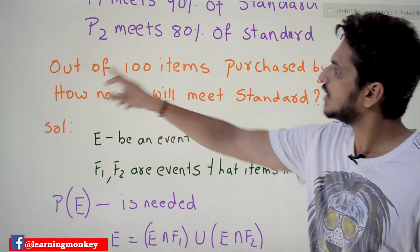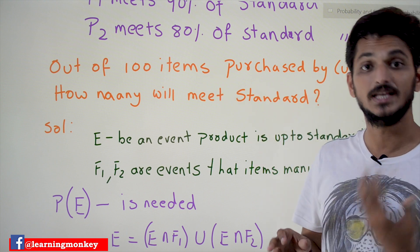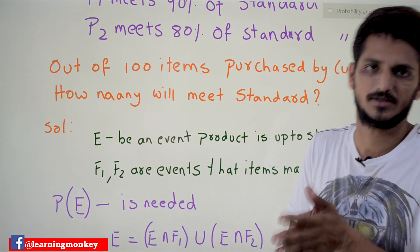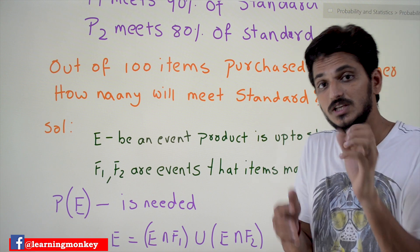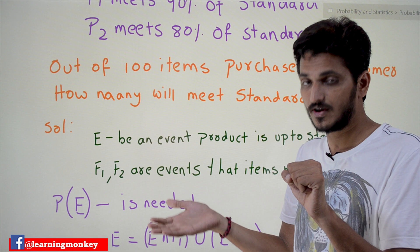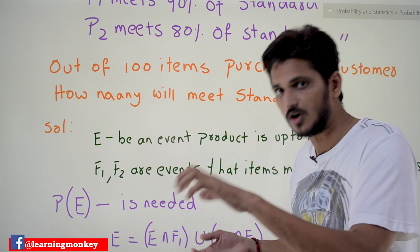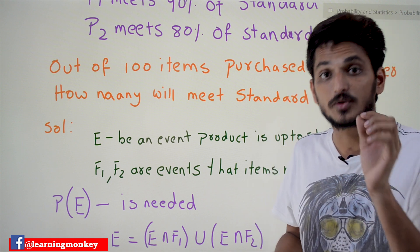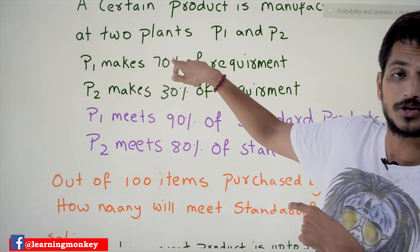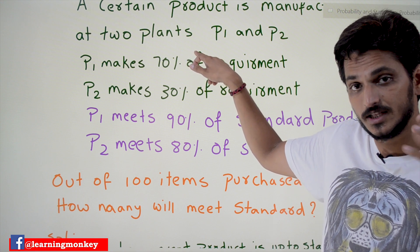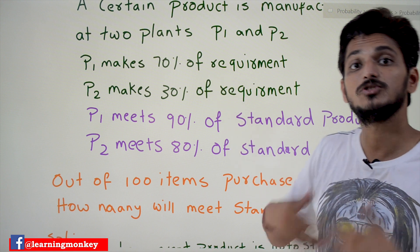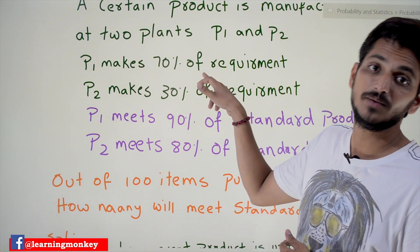The question is: out of 100 items purchased by a customer in the market, how many will meet the standard — that is, how many are good products? If you buy 100 products from the market, these 100 products are manufactured by either P1 or P2. The total probability depends on how much each plant contributes to the market and what percentage of good products each plant produces.